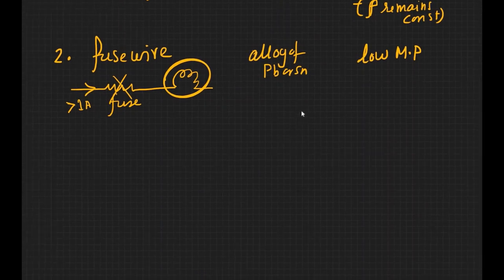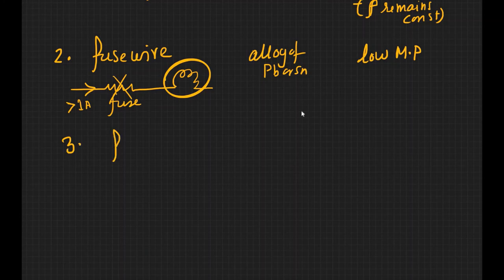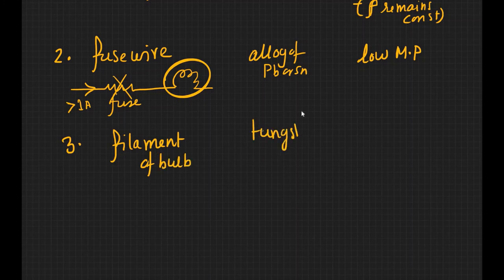So you want something with low melting point that will burn when excess current is passed. Now the third use case is a filament in bulb. You usually use metal like tungsten and the reason being it has a very high melting point.